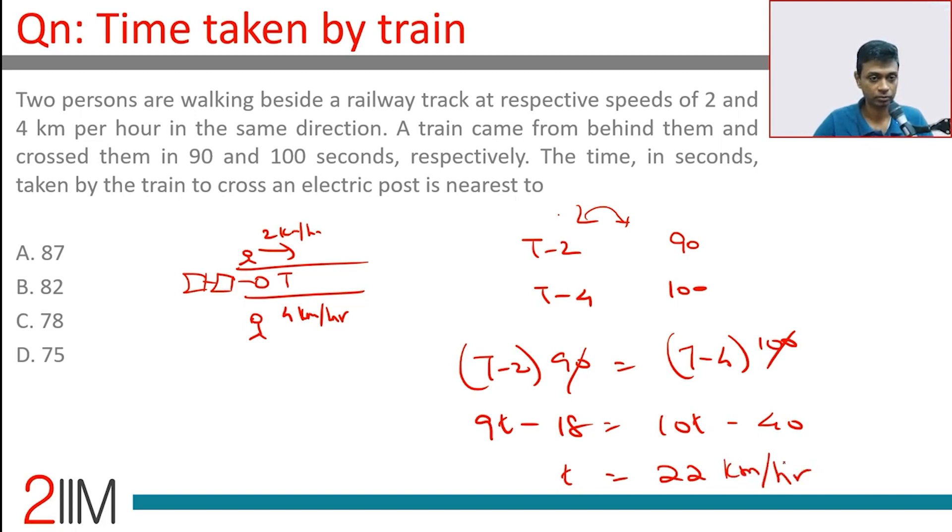The train is traveling at a speed of 22 kilometers per hour. This is 20 kilometers per hour, this is 18 kilometers per hour only.